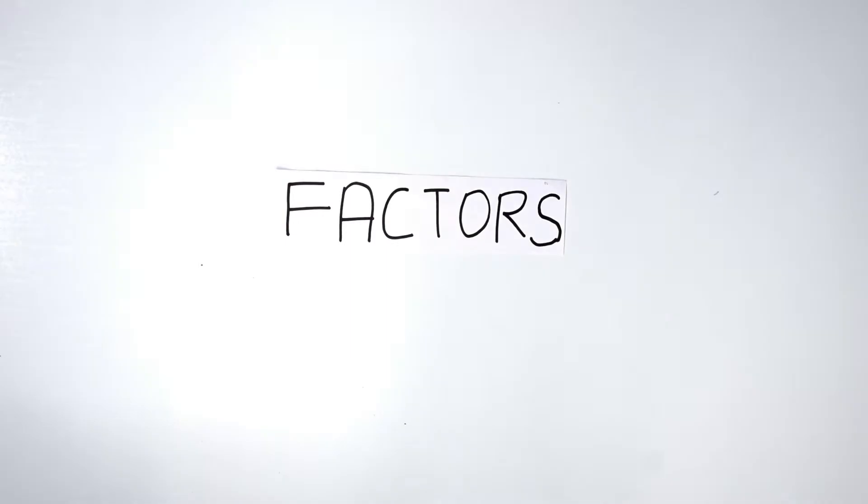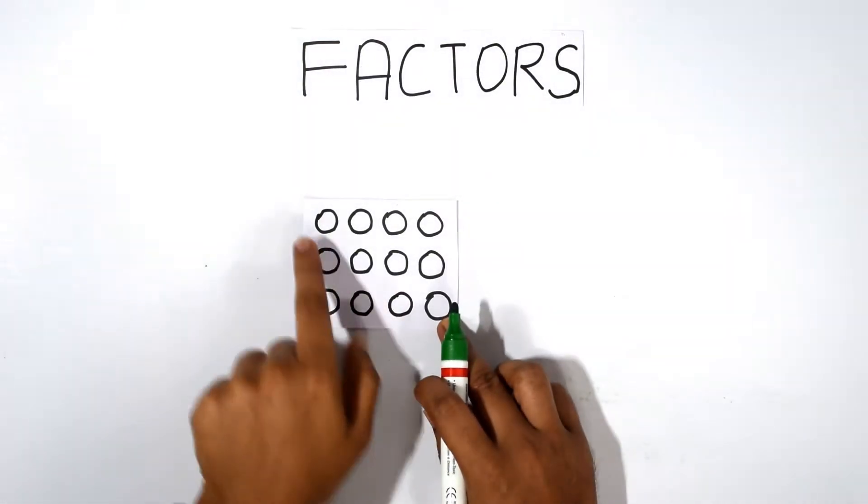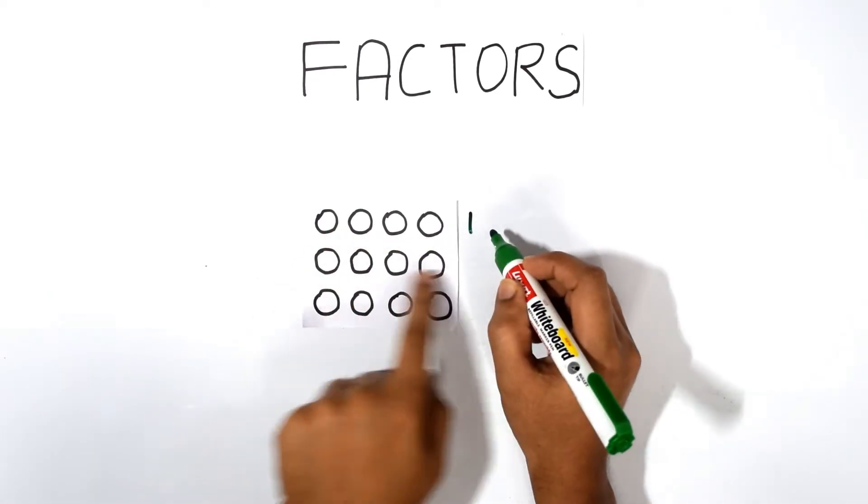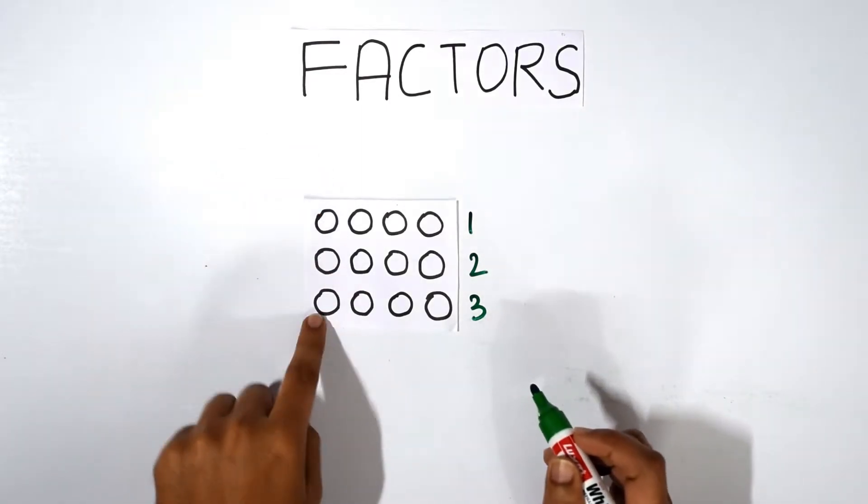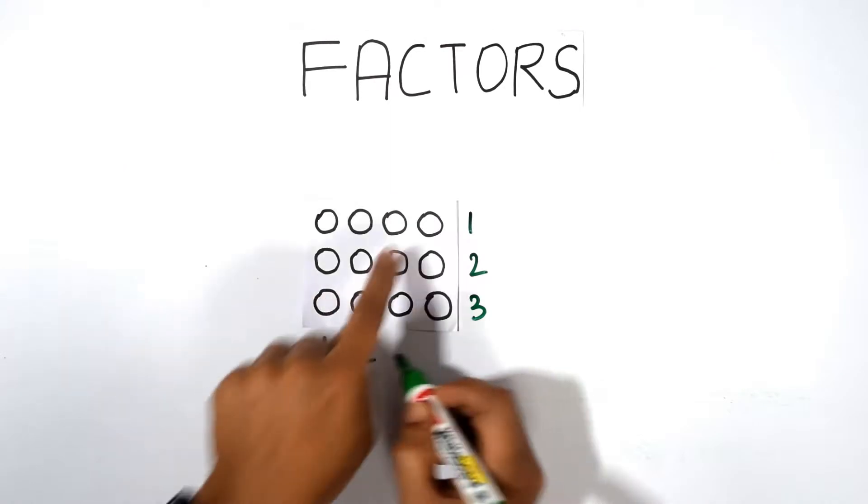Hi, in this Kuthari video we'll learn how to find factors for a given number. Before we do that, let's learn a simple concept. In this arrangement, the sleeping line is called a row, so we have three rows. The standing line is called a column, so we have one, two, three, and four columns.